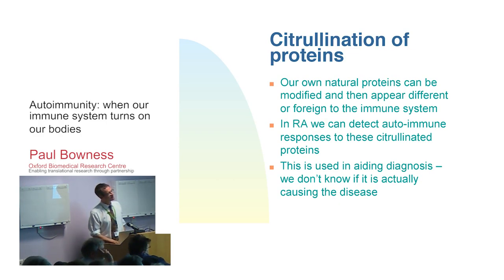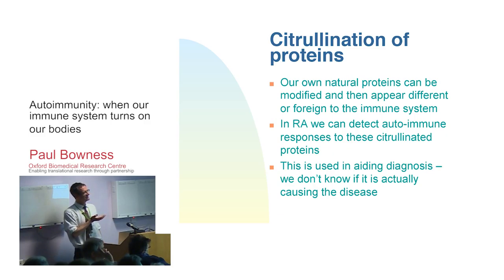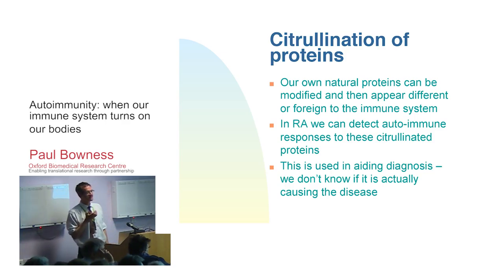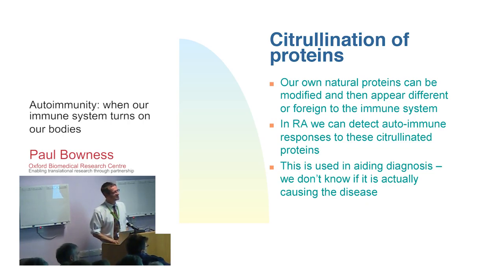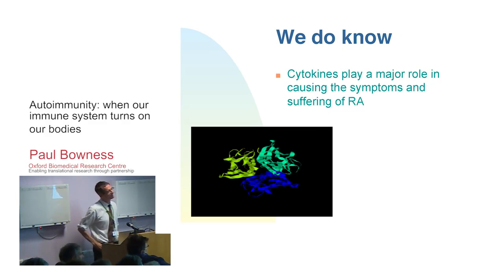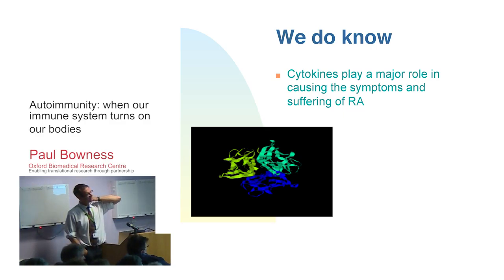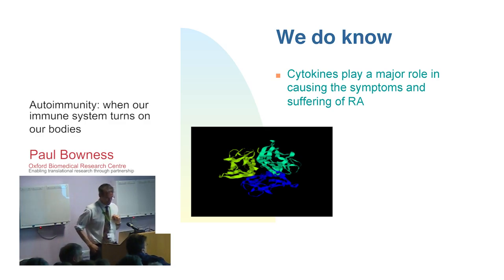This citrullination - it's a very long word - means our own natural proteins can be modified, and once modified they then appear foreign to our immune systems. In rheumatoid arthritis, we now know that these immune responses - both T cells and antibodies - occur very early on in disease and maybe even predate disease. This does help us with diagnosis, though it doesn't prove it's causing the disease. But ultimately, if we could find the switch that starts the whole process, we could switch it off. At the moment we use treatments that are not as sophisticated as that.